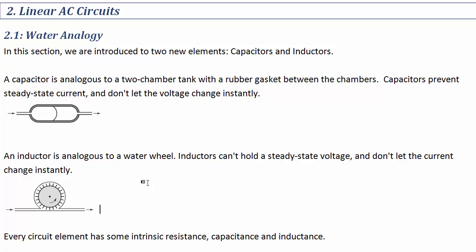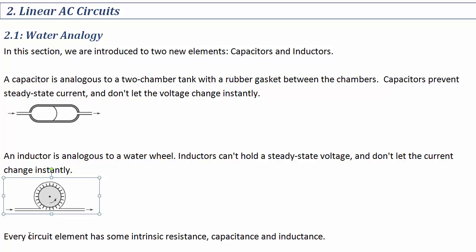An inductor, on the other hand, is analogous to a water wheel. The current can't change instantly; if it does, you can imagine it would break the pieces of this water wheel. Once the current gets going, the water wheel is turning and has some momentum — it wants to keep spinning the way it is, forcing the current to keep going at whatever level it's at, but it doesn't introduce any resistance to current flow at that point. Capacitors prevent steady-state current and don't let the voltage change instantly. Inductors prevent steady-state voltage and don't let the current change instantly.